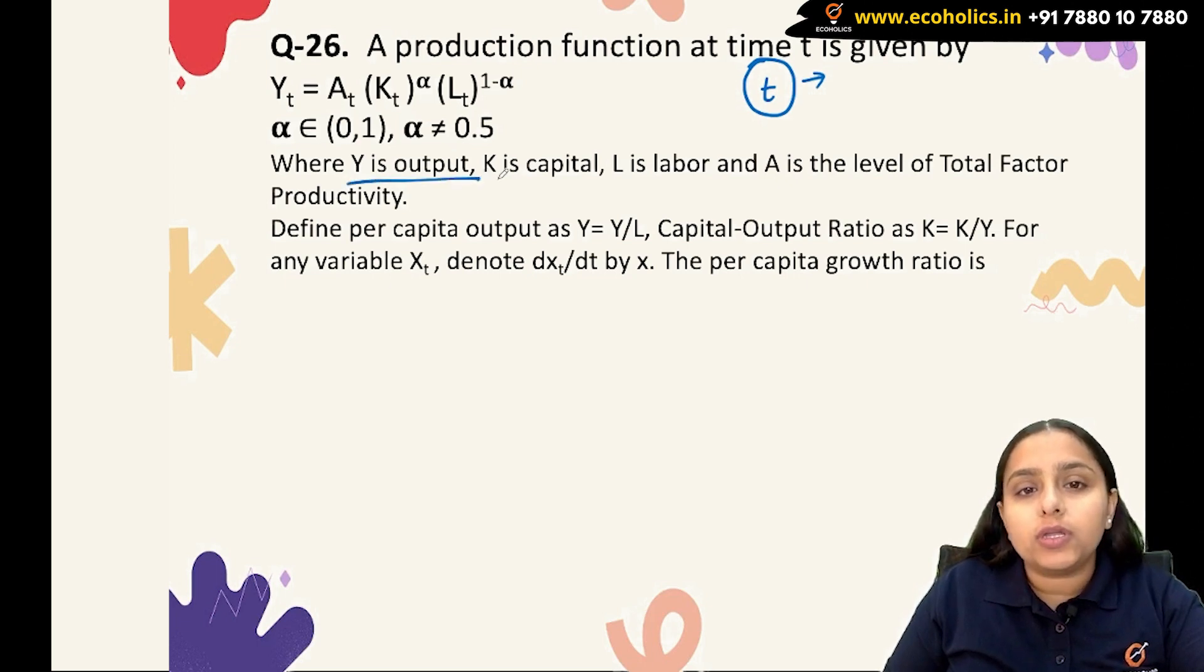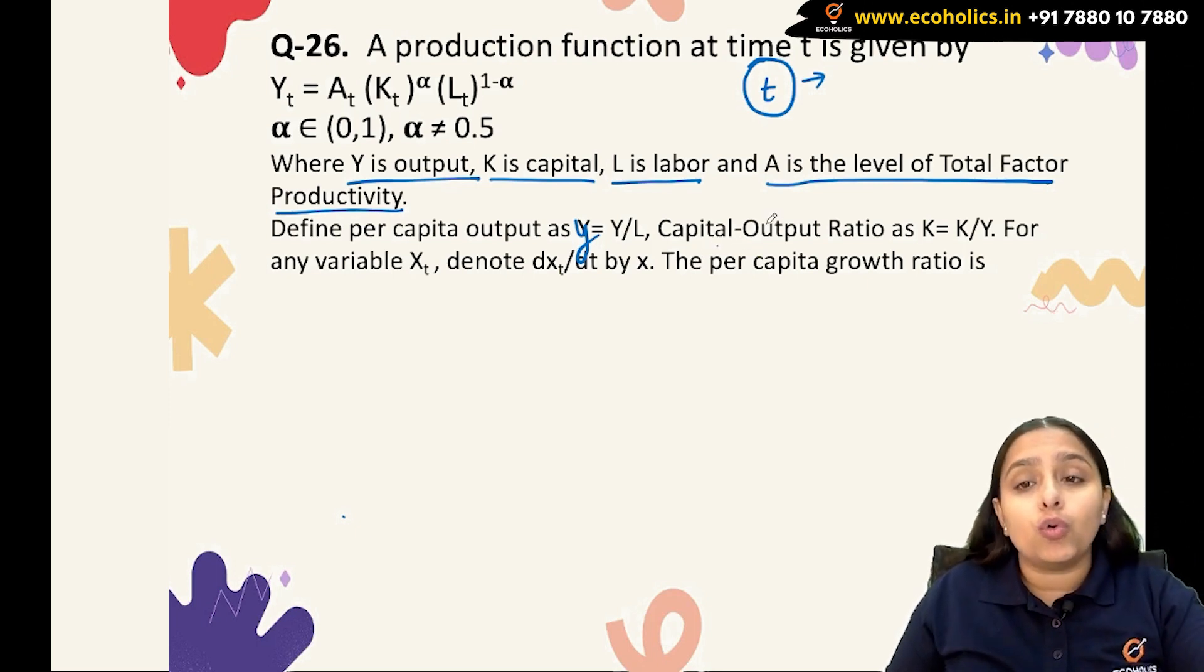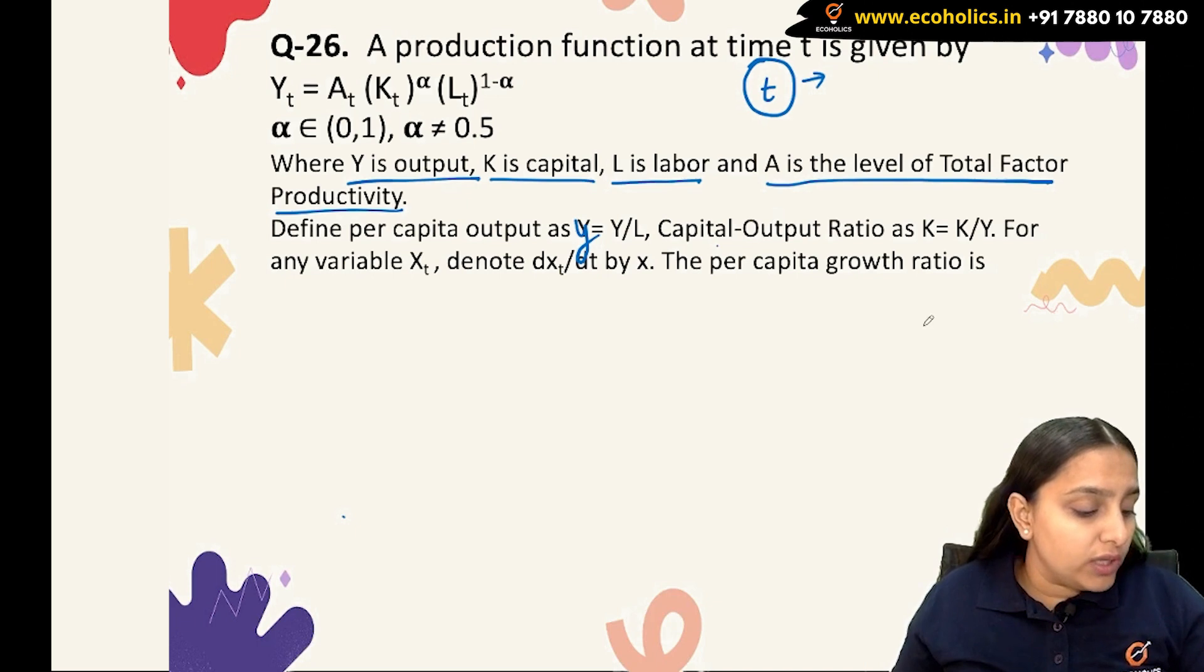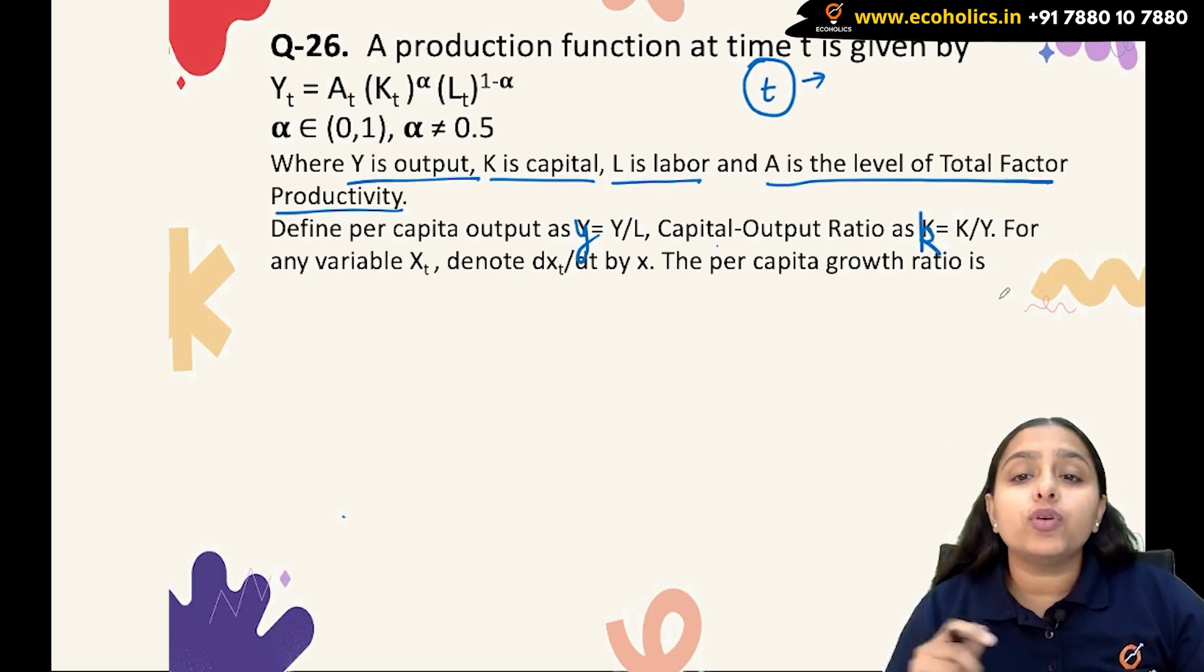Y is output, K is capital, L is labor, and A is the level of total factor productivity. Define per capita output as y = Y/L. Capital-output ratio as K = K/Y. For any variable X_t, denote dX_t/dt by Ẋ. The per capita growth ratio is what we need to find.